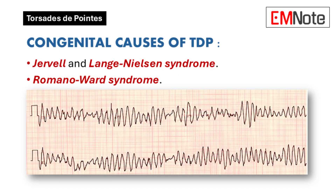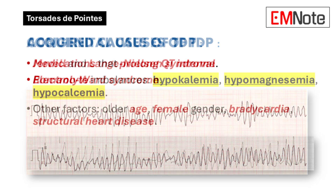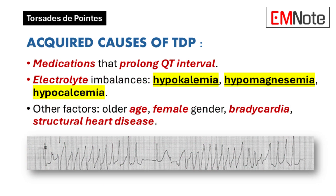The causes of Torsades de Pointes can be broadly classified as congenital or acquired. Congenital causes include genetic syndromes such as Jervell and Lange-Nielsen syndrome, often associated with congenital deafness, and Romano-Ward syndrome. Acquired causes are primarily related to medications and other modifiable risk factors.